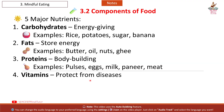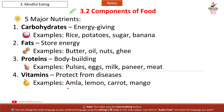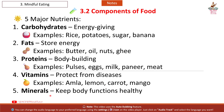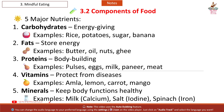Fourth: Vitamins – protect from diseases. Examples: amla, lemon, carrot, mango. Fifth: Minerals – keep body functions healthy. Examples: milk (calcium), salt (iodine), spinach (iron).